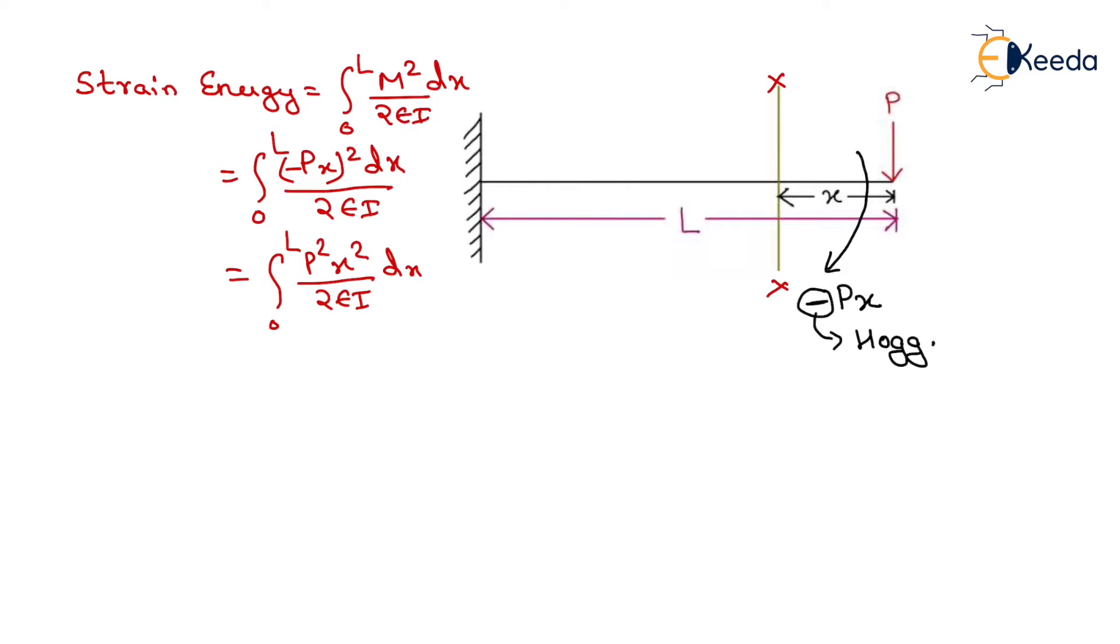P square upon 2EI is constant. So, we just take P square upon 2EI constant and by integration of x square, we will get x cube by 3 and the upper limit will be equals to capital L and the lower limit will be equals to 0.